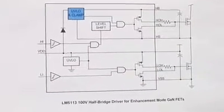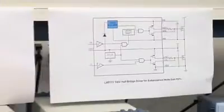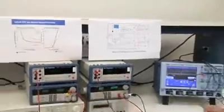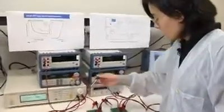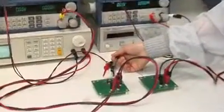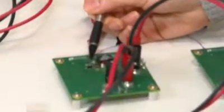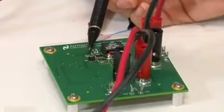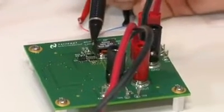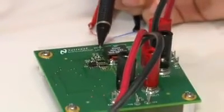So next, I'm going to use evaluation boards to demonstrate the functionality. I have two evaluation boards on the bench. This is basically a synchronous buck converter. Here you can see this is LM5113 in LLP 10 pin package. And these two are 100 volts enhancement GaN FETs.